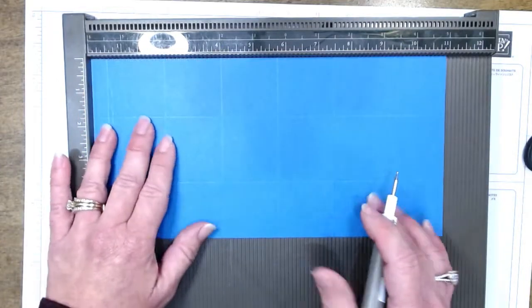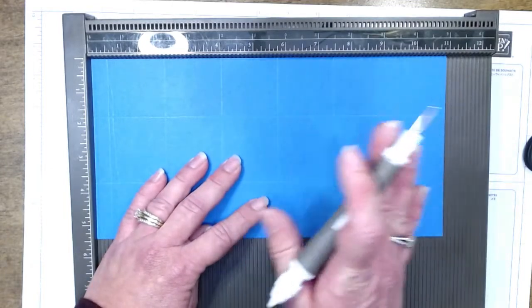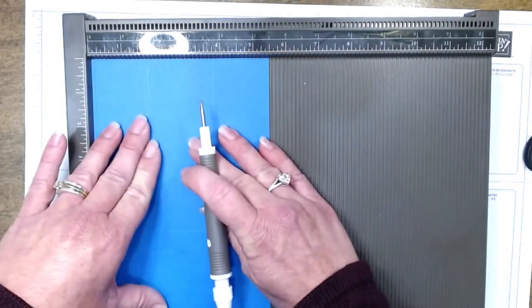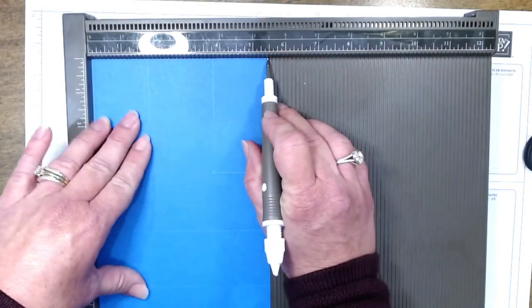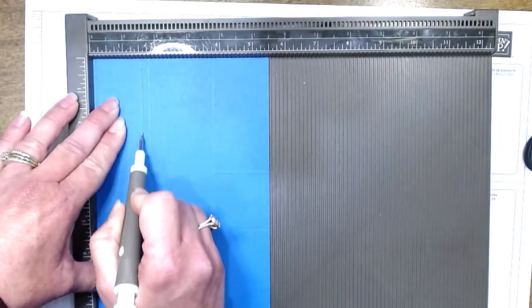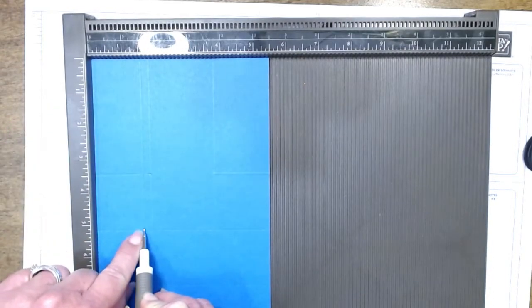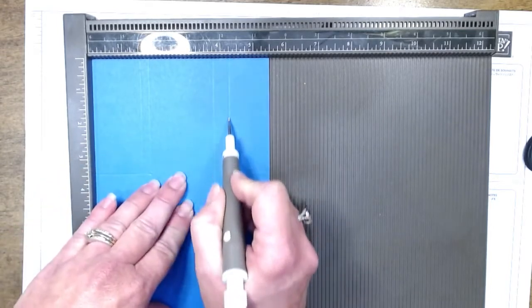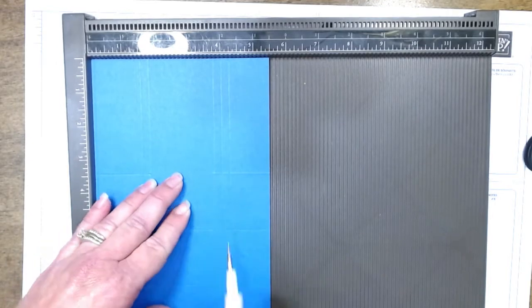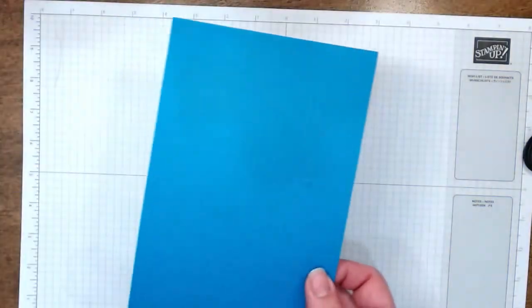So I'm just going to flip it over and score at the seven and a half inch. So hopefully you guys followed me on that. There's one more step we have to do. I'm going to flip this back over so the five and a half inch side is up top. I'm going to now come over and score it at one and a half, but I'm only going to go down to this first score mark. And then come over here and score at the four inch mark.